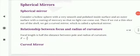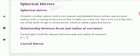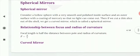For spherical mirrors, consider a hollow sphere with a very smooth and polished inside surface and an outer surface with a coating of mercury so that no light can come out. If we cut a thin slice out of the shell, we get a curved mirror, which is called a spherical mirror.